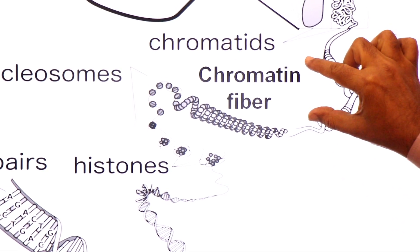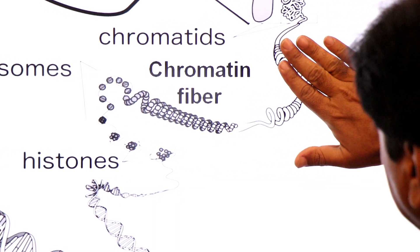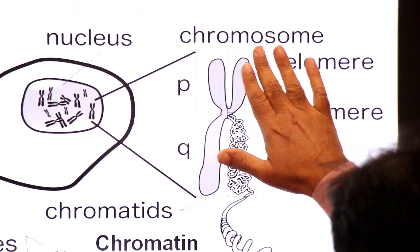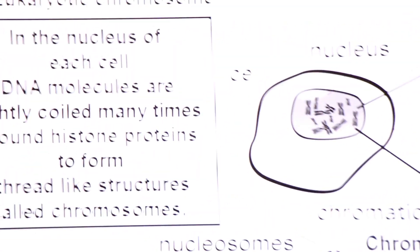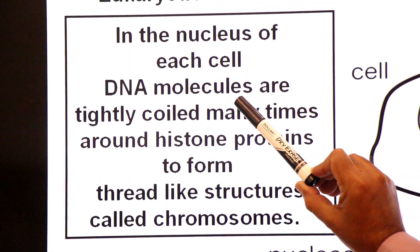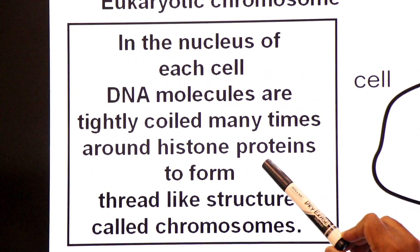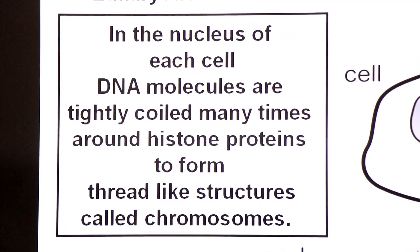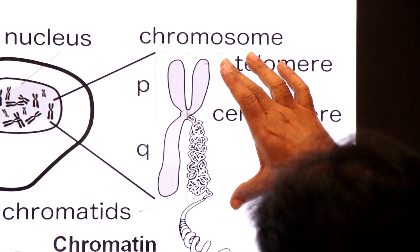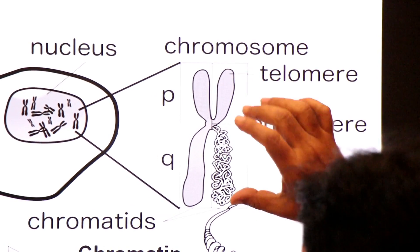Chromatin fiber is a mass of DNA plus histone protein. It undergoes further condensation, further coiling, and forms a super-coiled structure of DNA threads and histone, known as chromosome. In the nucleus of each cell, DNA molecules are tightly coiled many times around histone proteins to form thread-like structures called chromosomes.